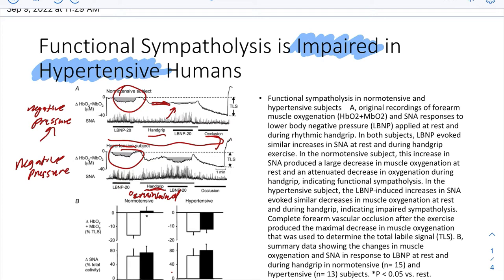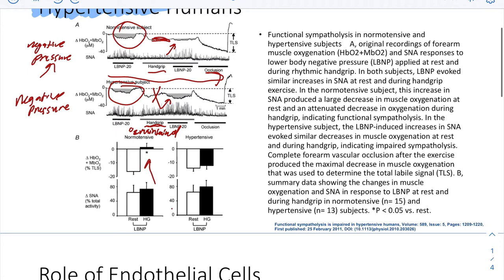the normotensive patients don't have a drop because that functional sympatholysis is working properly. Whereas hypertensive patients, we have a bigger drop in blood flow because we're not getting that functional sympatholysis. And then down here a little further, we see that these normal patients are maintaining their O2 levels, where hypertensive patients are not maintaining those levels. That metabolic autoregulation isn't working properly.